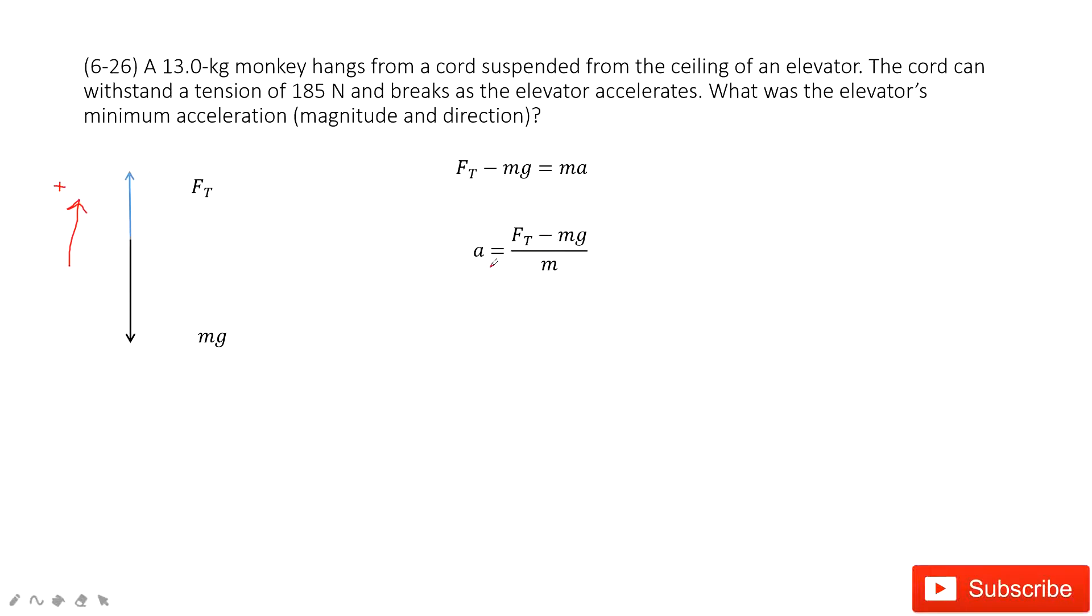Then we can get the acceleration as in this equation. Inside this equation, you can see the tension is given, mass is given, and g is acceleration due to gravity, 9.8 meters per second squared.